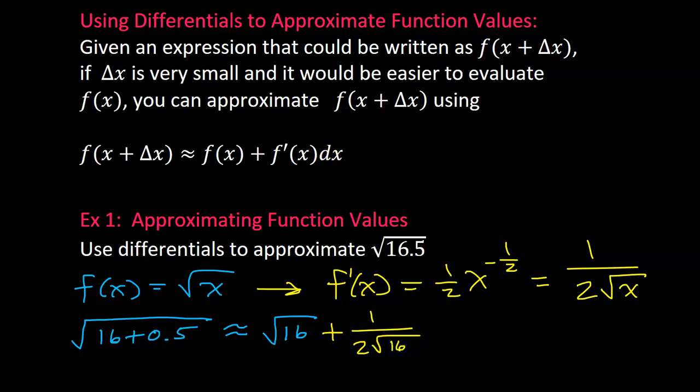But last, we have dx. The dx and the delta x are always going to be the same thing. So the delta x is 0.5, which means that the dx is also 0.5.